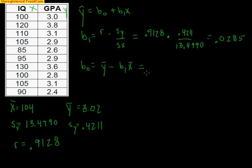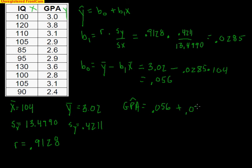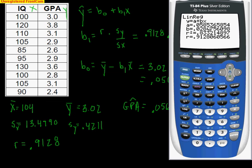For the Y intercept, we take the Y average, 3.02, it's important not to get the Ys and Xs mixed up or you'll get the problem wrong, and the slope we just found, 0.0285, times the X average of 104. On my calculator, 3.02 minus 0.0285 times 104 gives us a Y intercept of 0.056. Our final equation is the predicted GPA equals 0.056 plus 0.0285 times the IQ. Taking a look at the calculator one more time, all of this was on the calculator. There's the 0.056, a little bit off where we rounded, and there's our slope 0.0285, maybe a tad bit off, but only because we rounded.